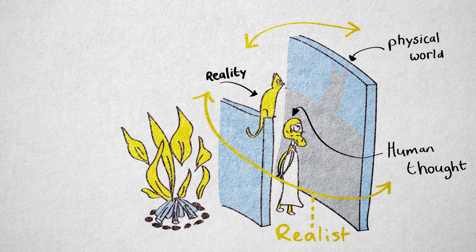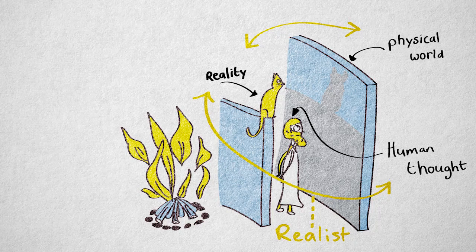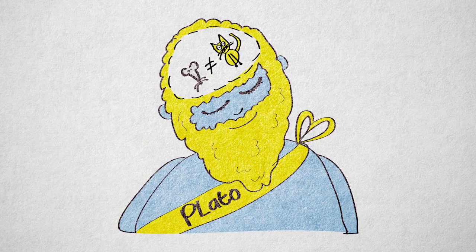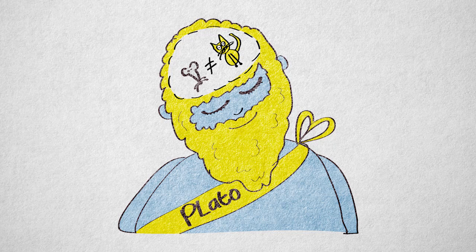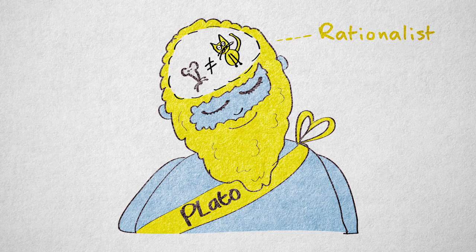Plato thought that since the physical world we see is an imperfect reflection of reality, we can't learn the true nature of reality through sensory experience. He insisted that knowledge about the ideal forms can only be gained through reasoning. Plato is therefore referred to as a rationalist.